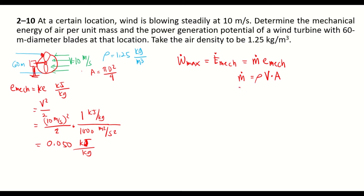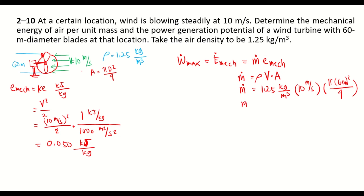Substituting: the mass flow rate equals 1.25 kilogram per cubic meter times 10 meters per second times pi times 60 squared divided by 4. So the mass flow rate equals 1.25 times 10 times pi times 60 squared divided by 4, which is equal to 35,342.92 kilogram per second.